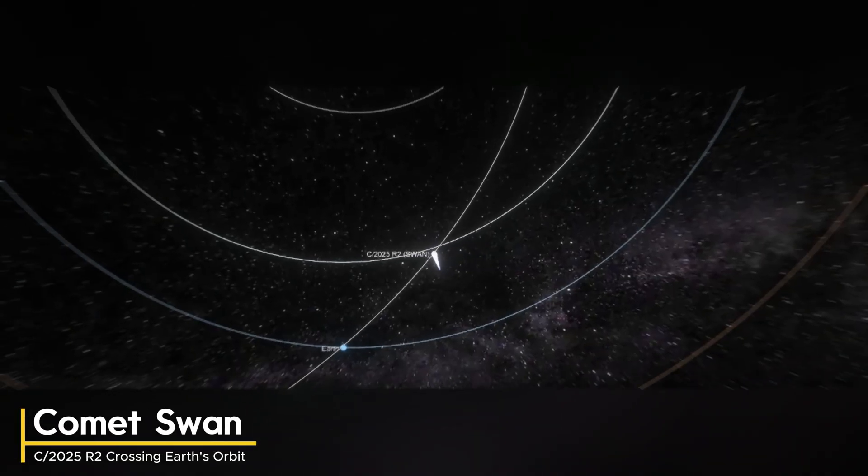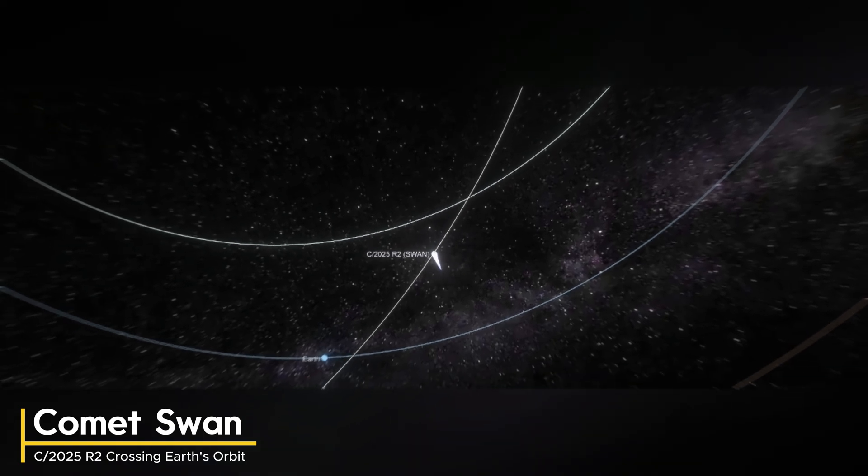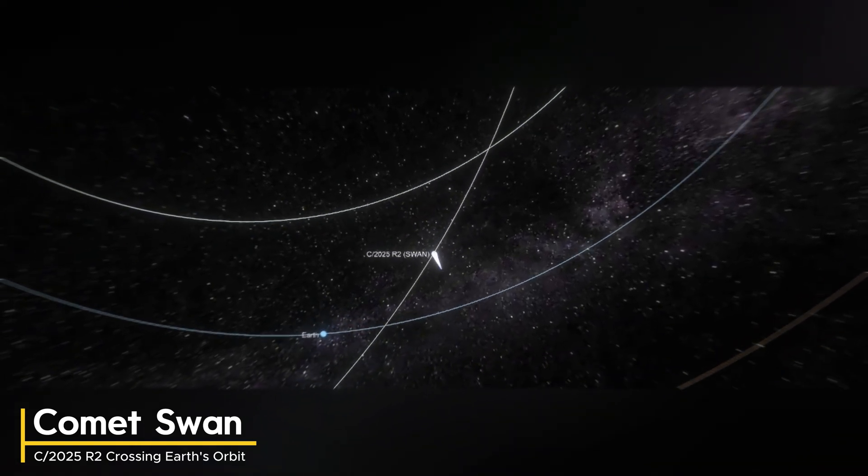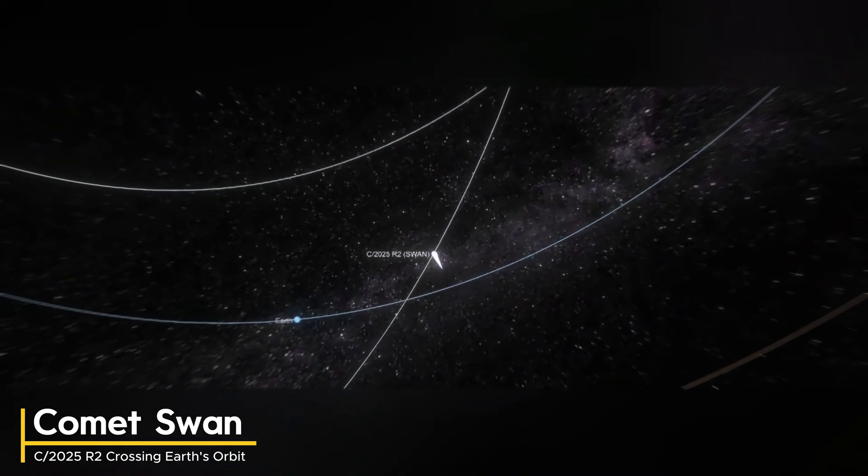But here's what really keeps astronomers awake at night. Earth will cross SWAN's orbital path on October 5th, just days before the two objects reach their closest approach to each other.